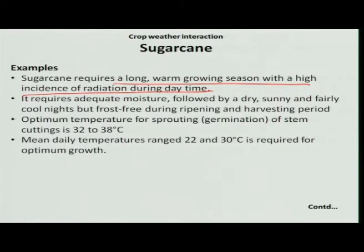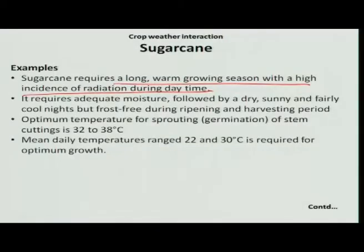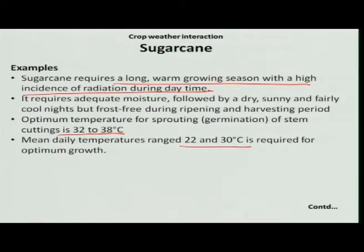The early season starts from November to mid-March and the late season starts from February to April. In the early season, sprouting takes almost 16 to 23 days, while in the late season during the hot weather period, germination is completed within 7 to 15 days. Therefore, temperature is an important determining factor for germination or sprouting of sugarcane. The optimum temperature for sprouting of stem cuttings is 32 to 38 degree Celsius, and for maximum growth over 6 to 7 months an optimum temperature of 22 to 30 degree Celsius is most essential.